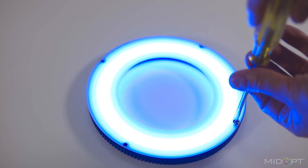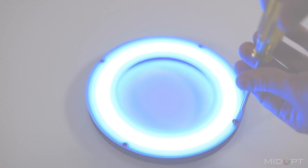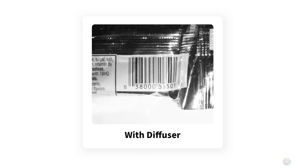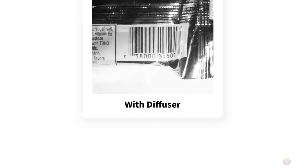Here is an example of an image taken from a vision application that was not utilizing a diffuser. The hotspot makes the barcode difficult to read, resulting in an error. But once a diffuser is added, the subject is more uniformly lit and the interfering hotspot is no longer present.